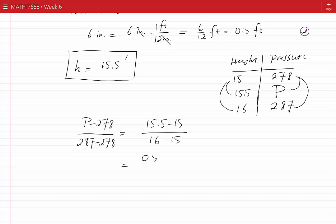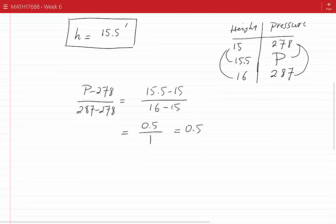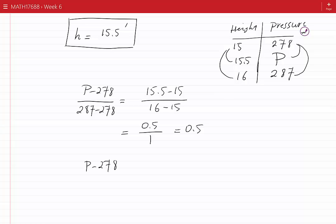We can simplify the left-hand side. P minus 278 divided by 9 equals 0.5.